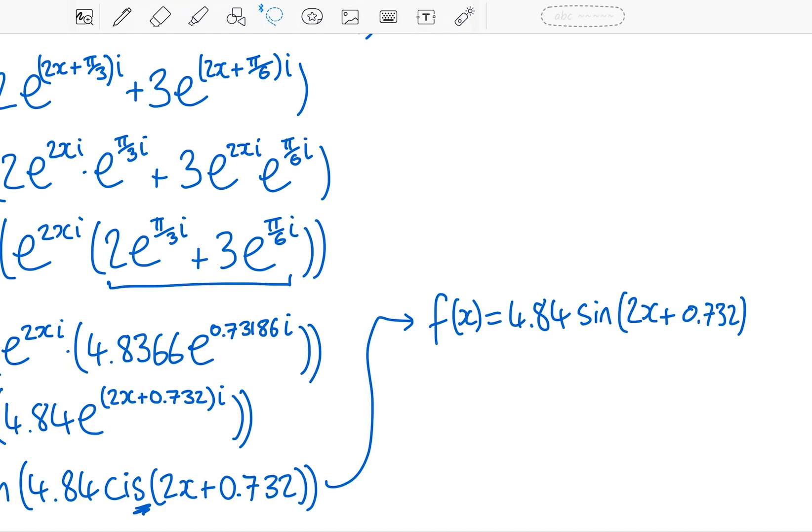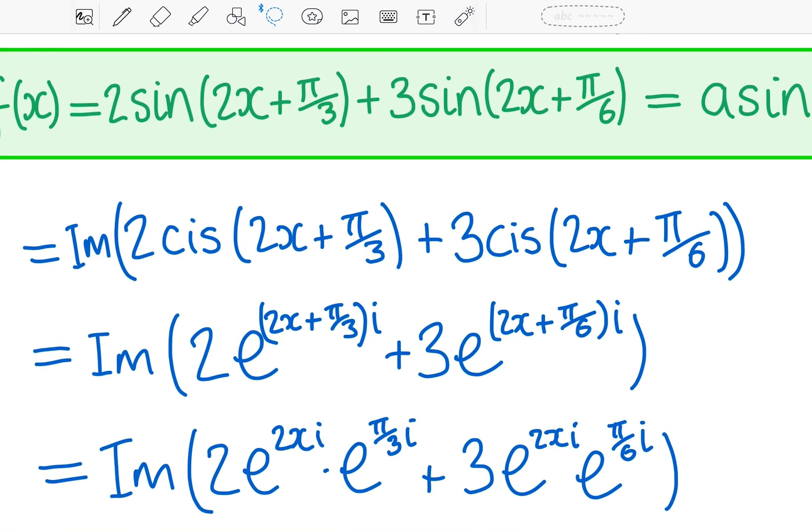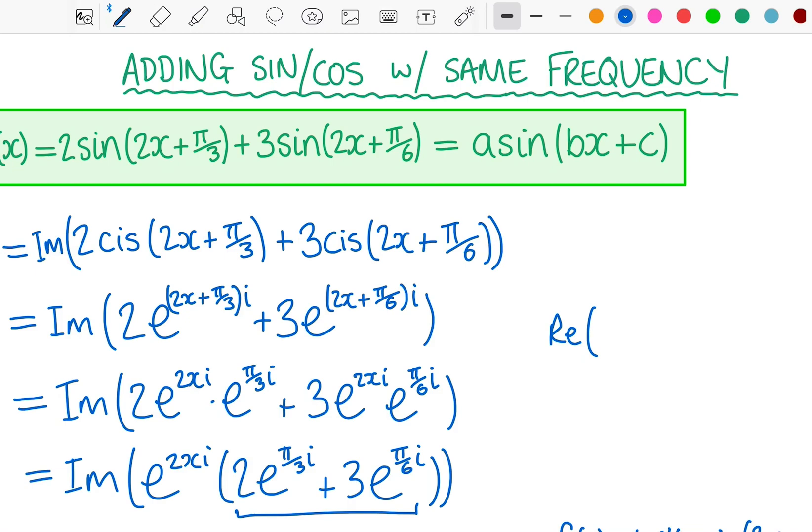You will get the exact same thing with cosine. In that situation, all you do is take the real part. You take the real part of something, cis something, and go through the whole process. And at the end, just take the cos out of the polar form complex number.